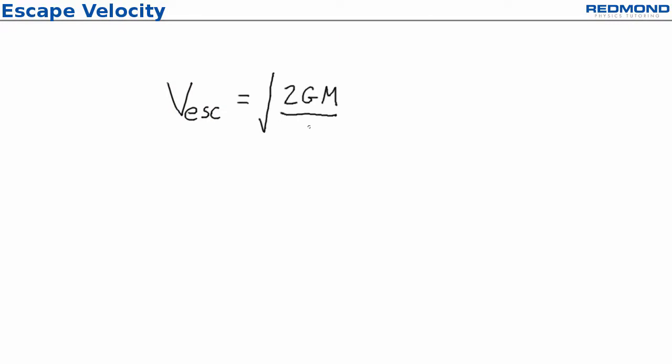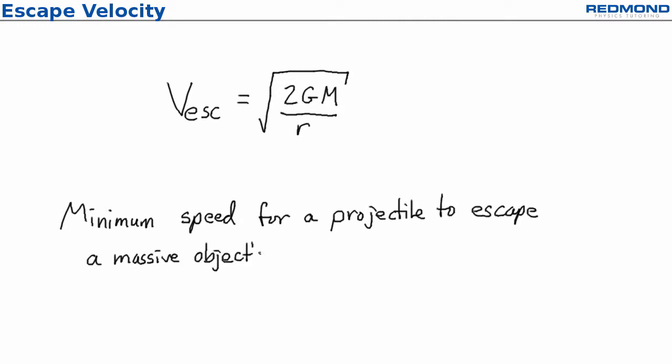Escape velocity is the minimum speed for a projectile to escape a massive object's gravitational field. Calling it velocity is actually a misnomer because it doesn't have direction. It should actually be escape speed, but I have to admit that it just sounds better to call it escape velocity.